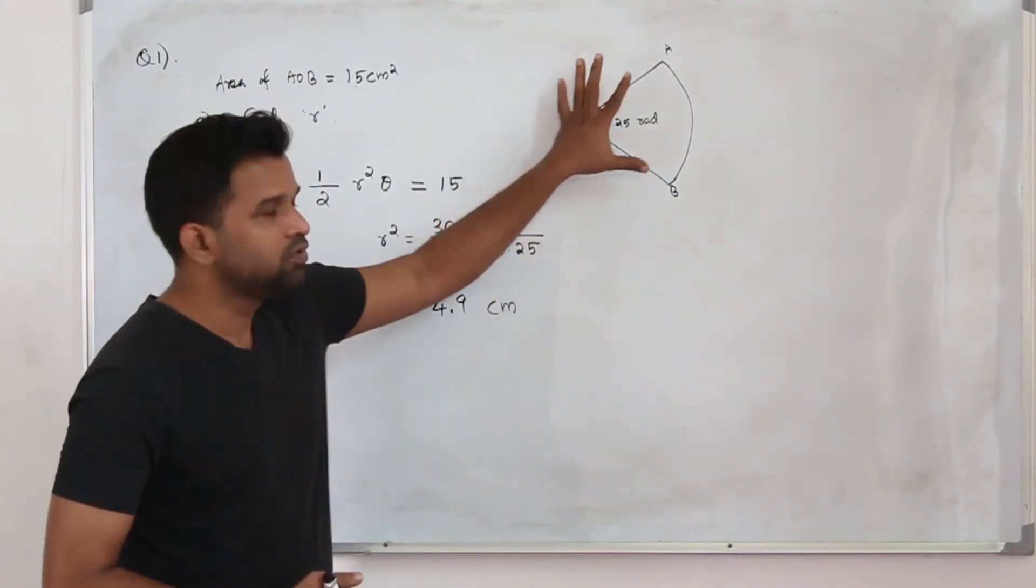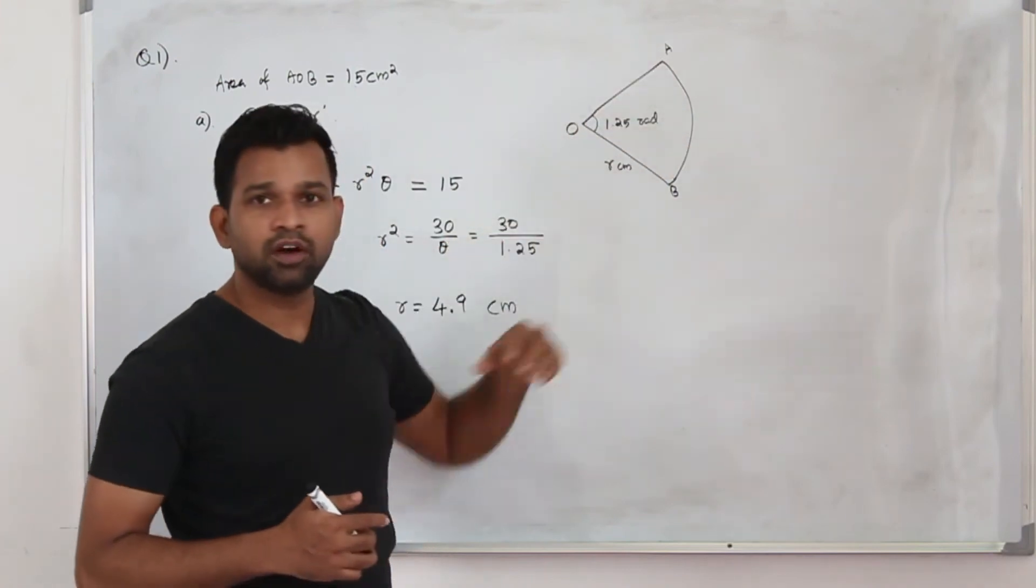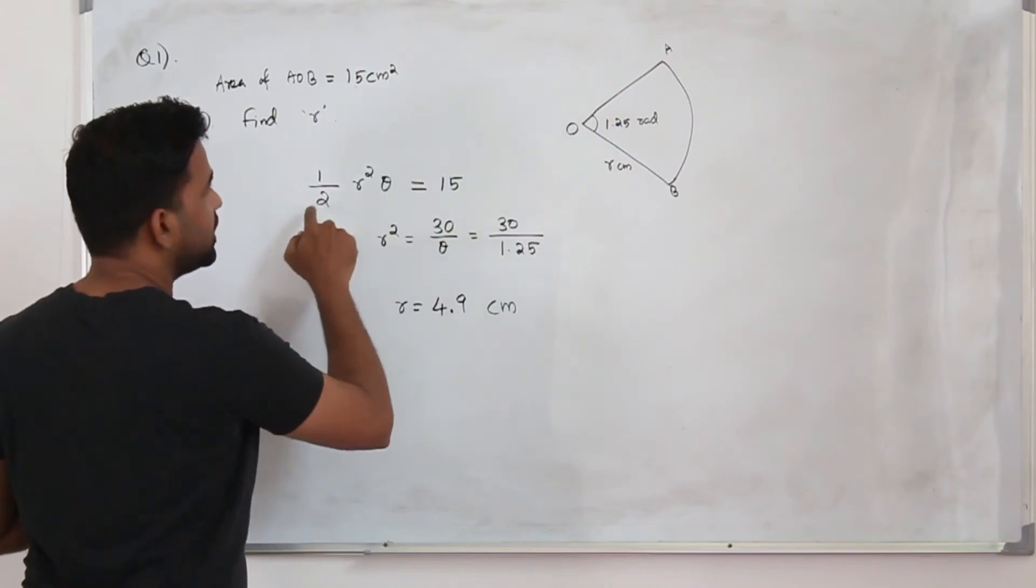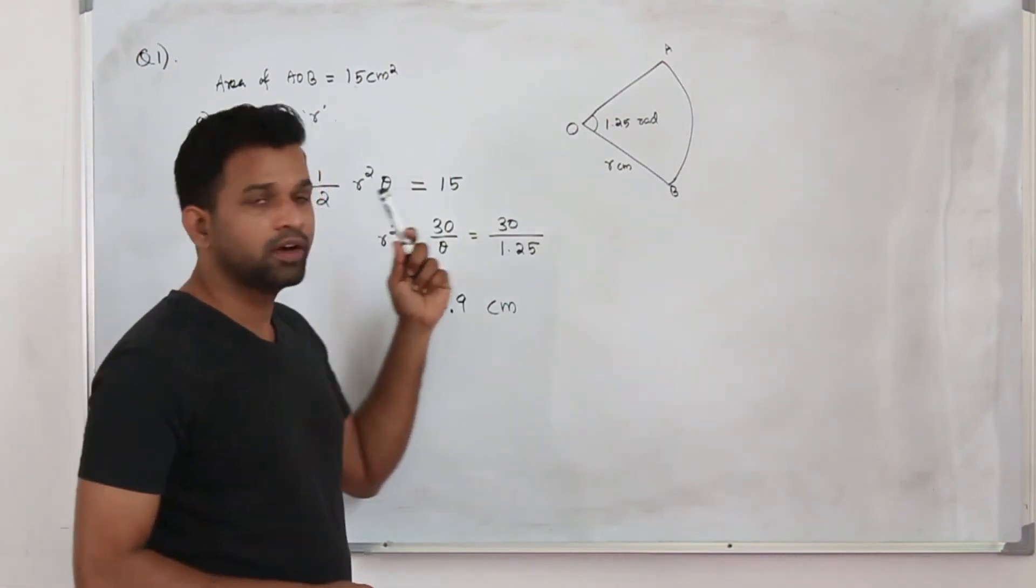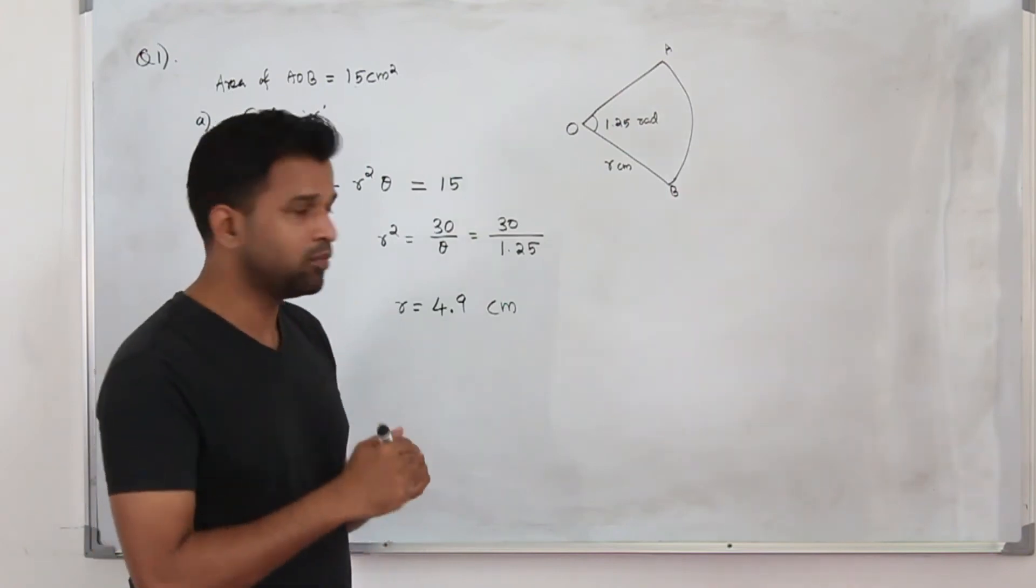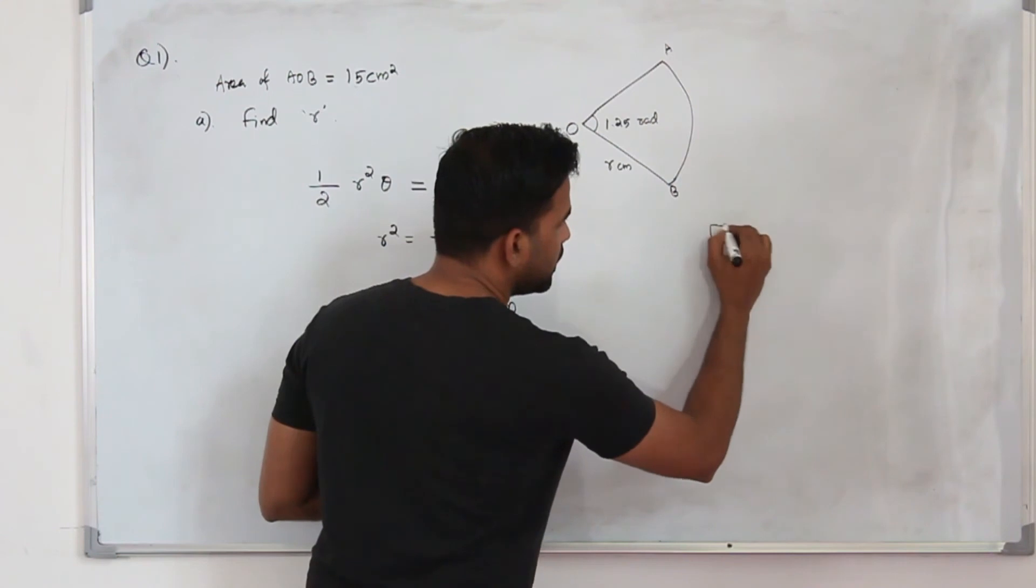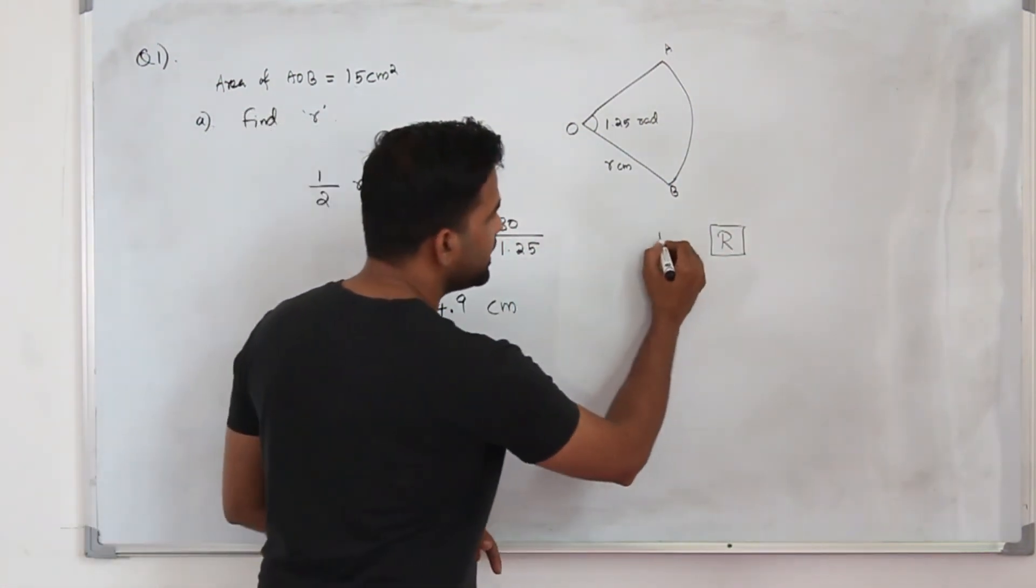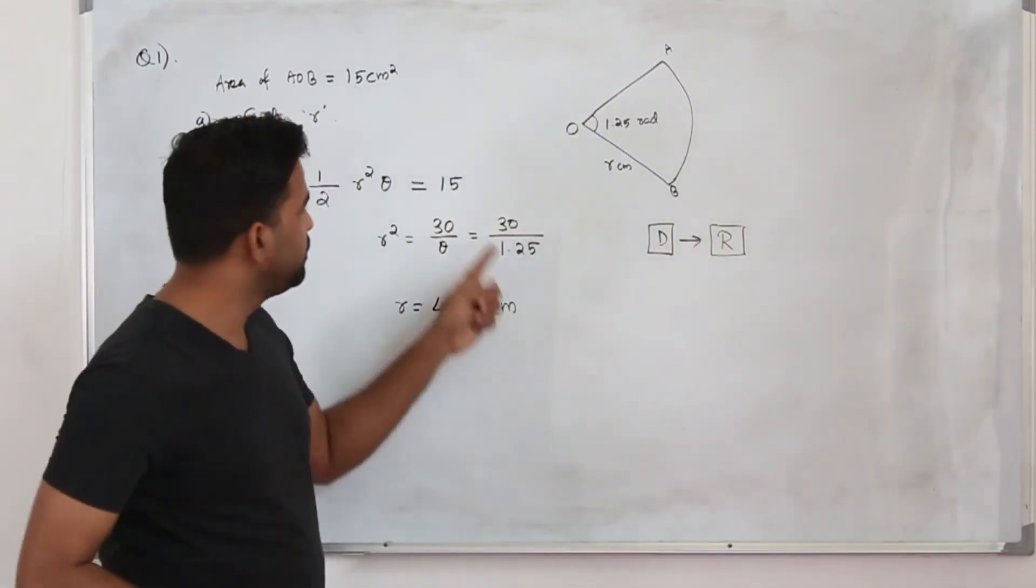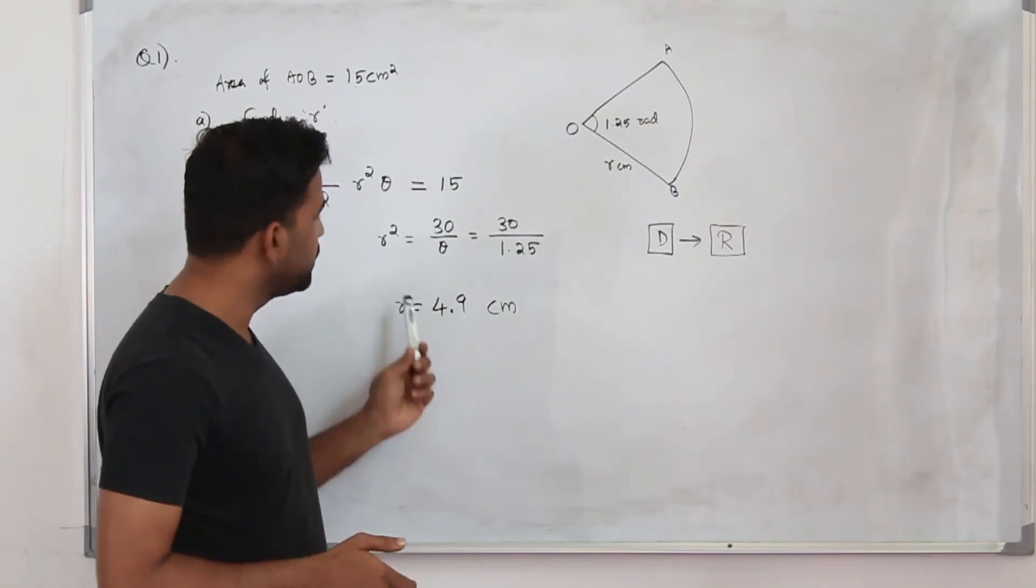You must have learned this area of the sector or arc length formula in degrees. But in radians, this is the formula: half R square theta is the formula for area. But you need to make sure your calculator is in radian mode. Usually you can see a small R in your calculator display. If D—that's degree—you need to change degree to R first before you calculate.